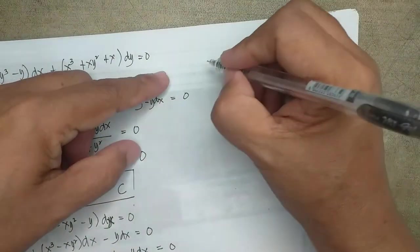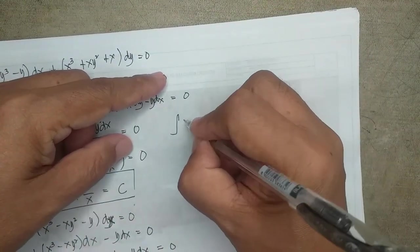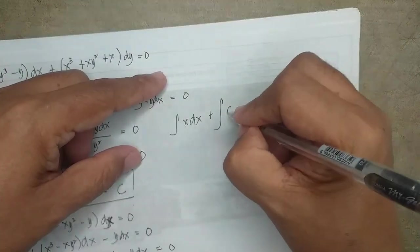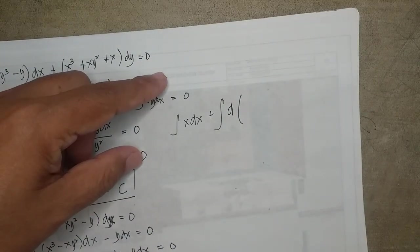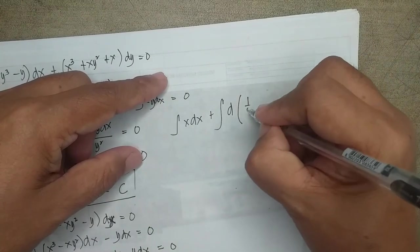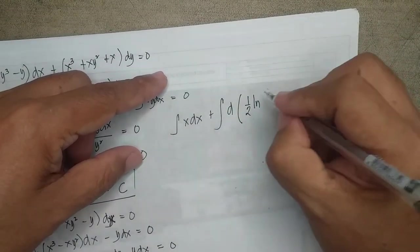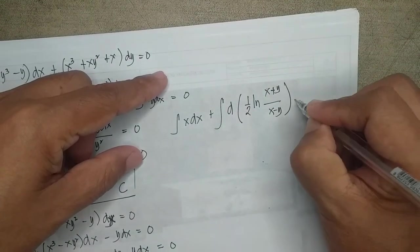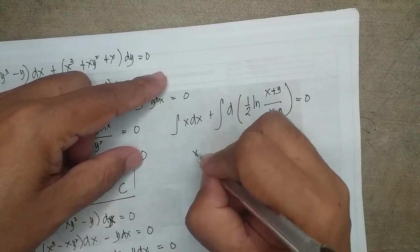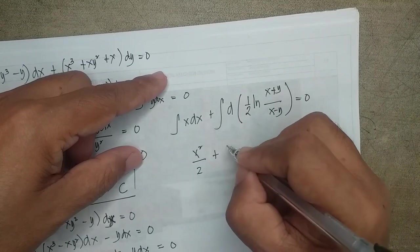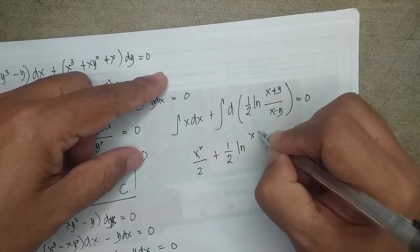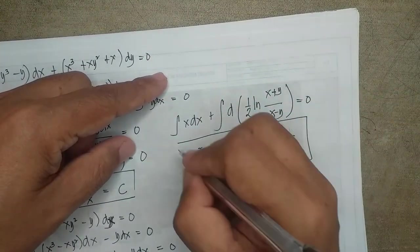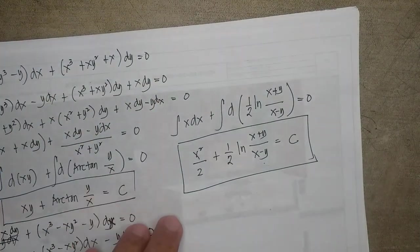We have the integral of x dx plus the integral of the derivative of formula number five, giving x²/2 plus one-half ln|(x+y)/(x-y)| = c. This is the solution for example number seven.